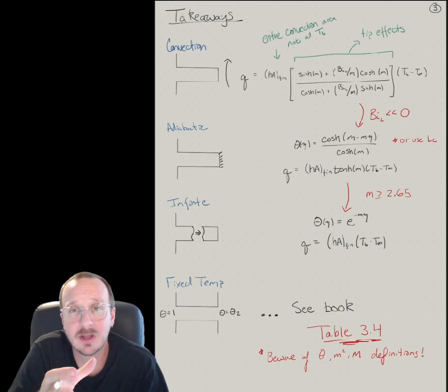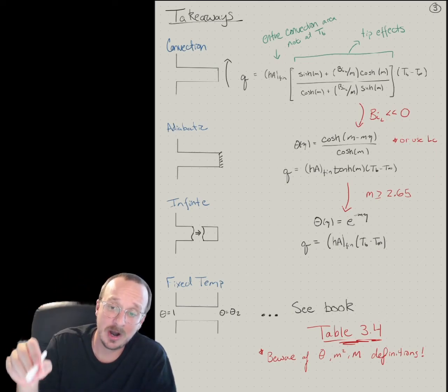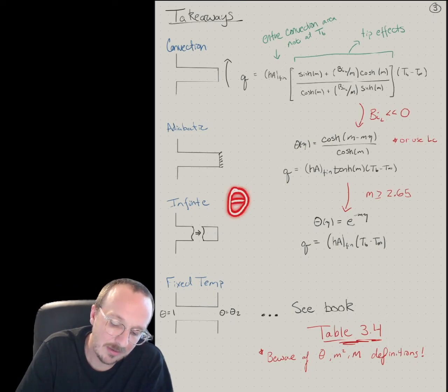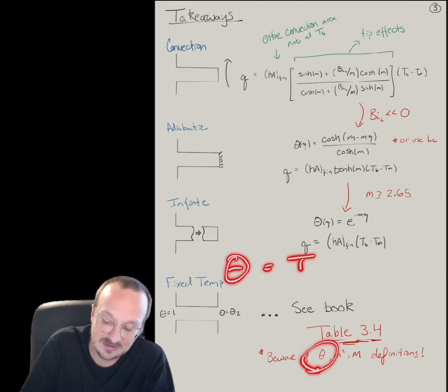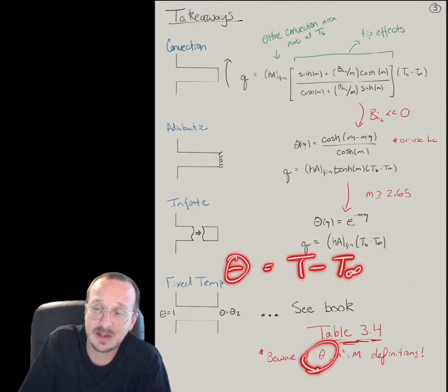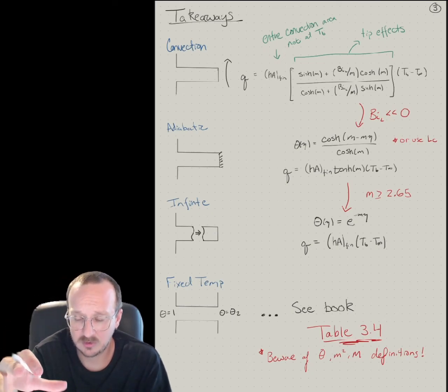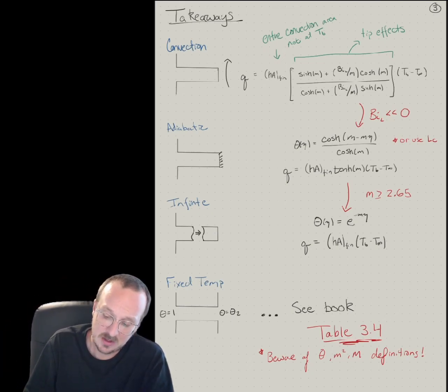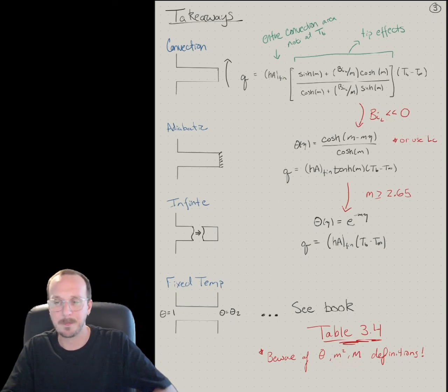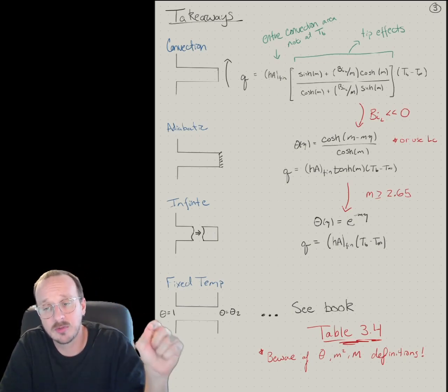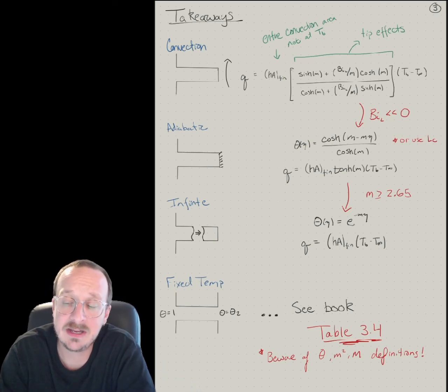Anytime you use a book, it doesn't matter what the book is. If it's different editions of the book, especially compared to what I'm writing, beware of theta, M squared, M capital M definitions. So when I'm talking about theta, I'm talking about a dimensionless temperature. And for whatever reason in this book, they write theta. They say it's T minus T infinity. That's not dimensionless. That's just a relative temperature. That's just a delta T. So they do that because of infinite fins or something. But anyway, good engineer, we should use dimensionless numbers. So my theta is always a dimensionless theta. They also define M and capital M differently. I think you should go by what I'm writing, of course, but it doesn't matter. All of the equations are the same. Just look at your footnotes, look at the description of the table, and you'll know exactly what they mean when they write a term like theta or M or whatever.